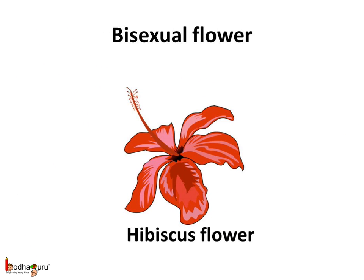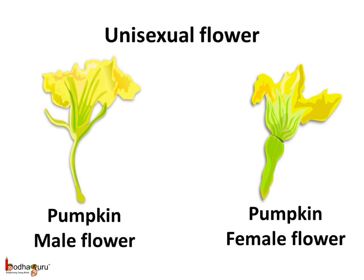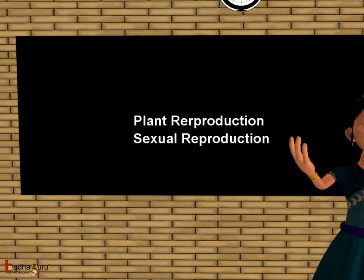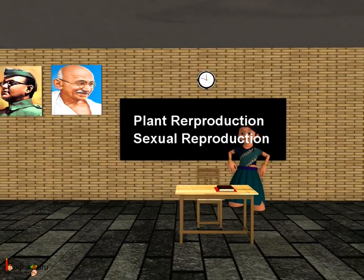In certain plants, for example the hibiscus plant, the same flower has both the male and the female gametes. Hence the flower is called a bisexual flower or the complete flower. While in other plants — for example pumpkin, corn, papaya, etc. — the flower has either the male gamete or the female gamete. Hence the flower is called the unisexual flower or the incomplete flower. So this is how plants reproduce through seeds. That's all for now. Bye bye, children.